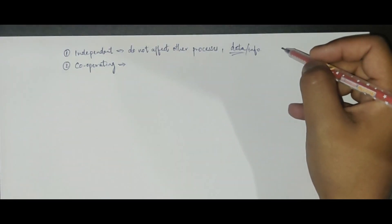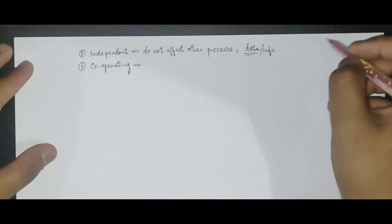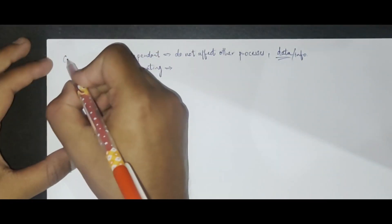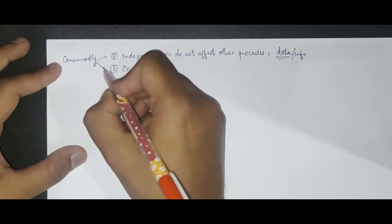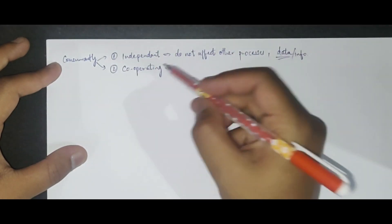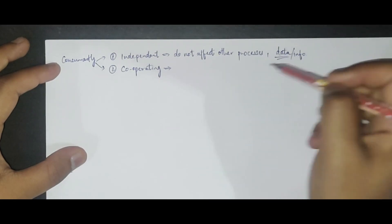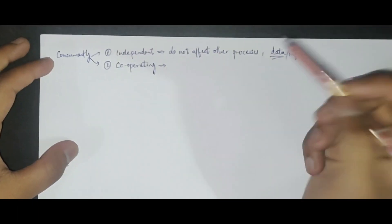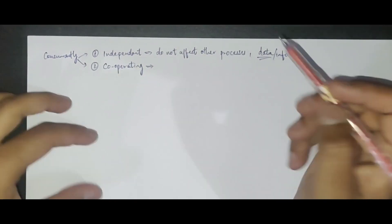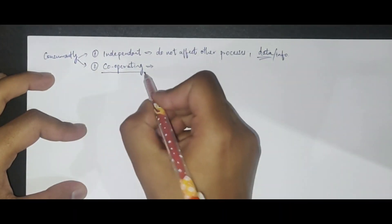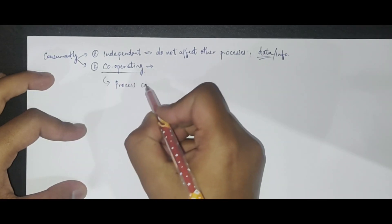So the basic difference is: independent processes will not affect other processes, while cooperating processes will affect or get affected by other processes. Now why do we even need process cooperation? Why would this be required?